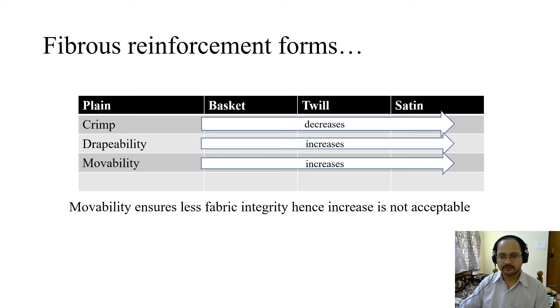In case of fibrous reinforcement forms, we have seen three types of weave: basket, twill, and satin. The crimp decreases from plain to basket, to twill, to satin. If the crimp decreases, in satin, even if we try to find out the length of the yarn, it will not be very long compared to the length of the fabric. Now drapability or formability: how easily can you shape or form around a curvature?